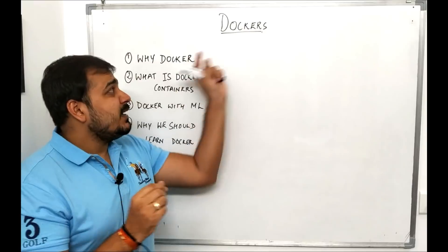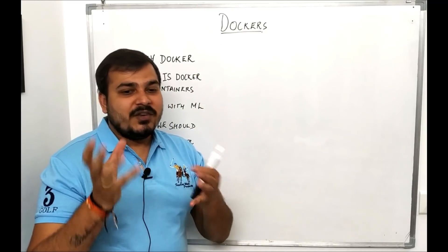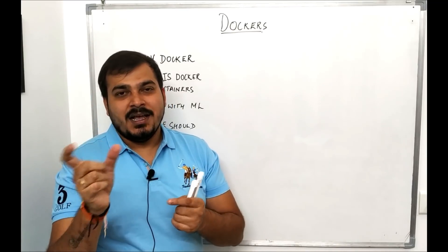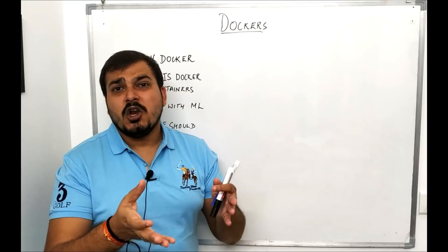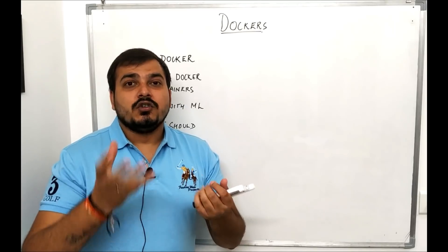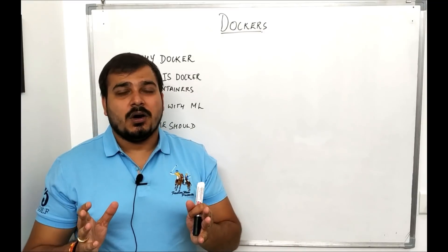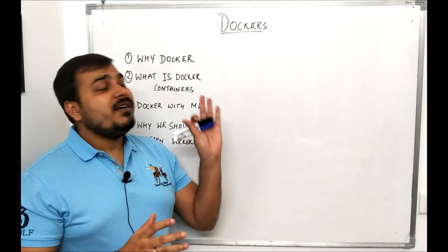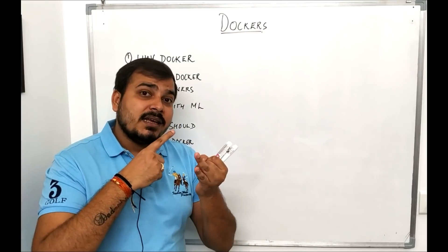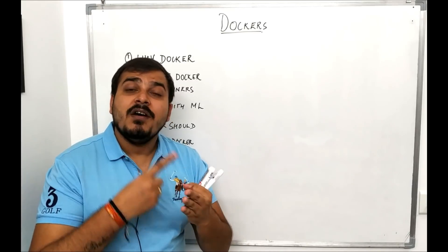This is pretty important because once you develop a model — we have seen videos with respect to deployment in my deployment playlist where we create an endpoint address — that is fine when you're working in your local system. But if you think of making your model API more scalable, we can use Docker. This playlist will take examples with respect to machine learning, NLP, and deep learning problem statements.